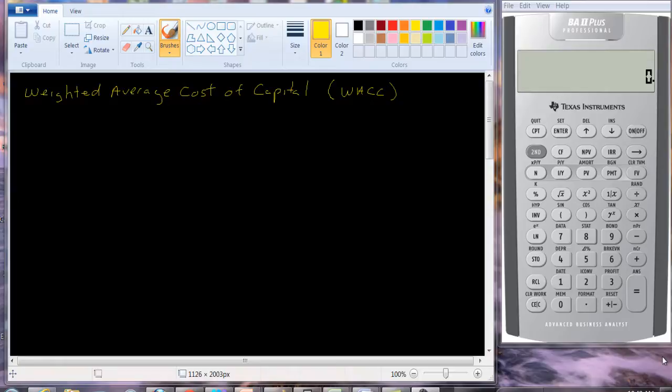And what we usually do is we calculate what we refer to as the weighted average cost of capital, oftentimes abbreviated as WACC or WACC.